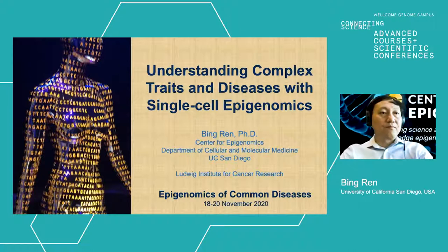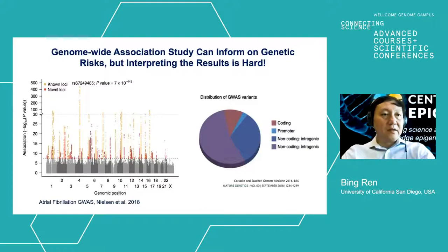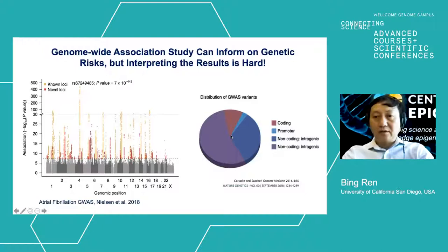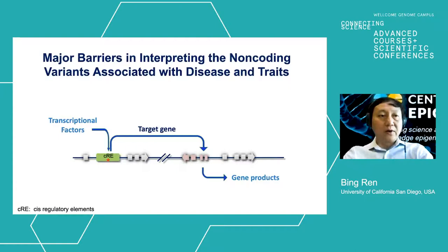The genome-wide association study has informed us on the genetic risks of thousands of diseases and traits. But the interpretation of the function of the variants has been extremely hard, because they are mostly located in a non-coding part of the human genome, where currently functional annotation is still lacking. It has been generally believed that many non-coding variants contribute to disease by perturbing transcriptional sequences in the genome and cause misregulation of genes in specific cell types, and there are more and more examples to support this hypothesis.